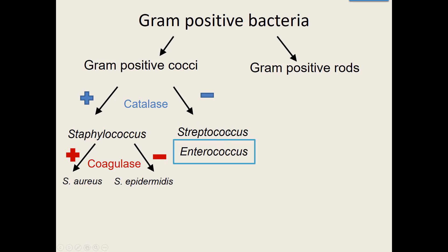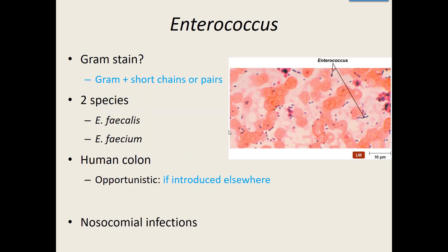When we gram stain them, they're gram-positive and also like to hang out in short chains or pairs, just like Streptococcus pneumoniae. Out of all the Enterococcus bacteria out there, there are really only two species that actually cause human disease: Enterococcus faecalis and Enterococcus faecium. They're found in the human colon — hence their name 'entero' — and they're just fine as part of the normal flora.